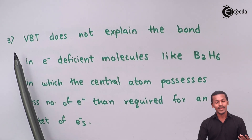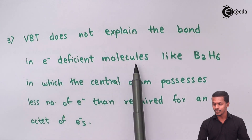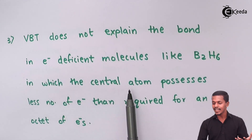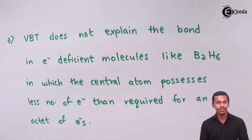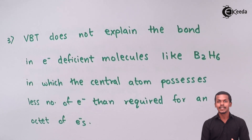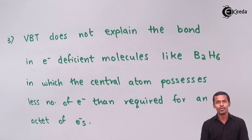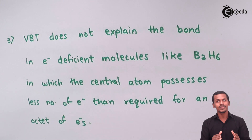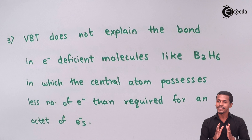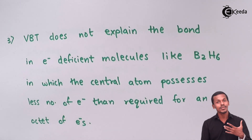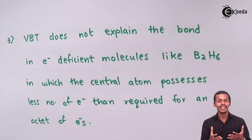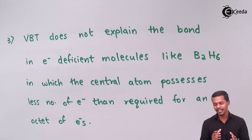Another limitation is that VBT does not explain bonding in electron-deficient molecules like B₂H₆ (diborane), in which the central atom possesses fewer electrons than required for a complete octet. As discussed in the topic of inadequacies of the octet rule, certain molecules have an incomplete octet yet are still stable. VBT could not explain how such molecules form bonds and remain stable despite having fewer than 8 electrons in their outermost shell.